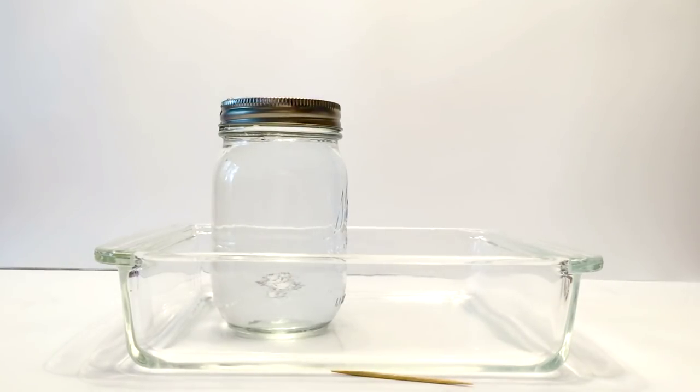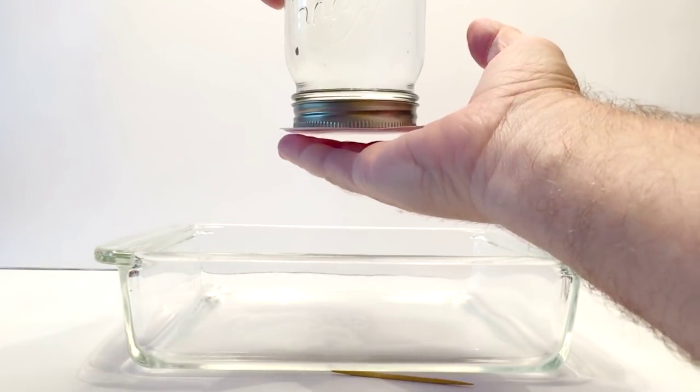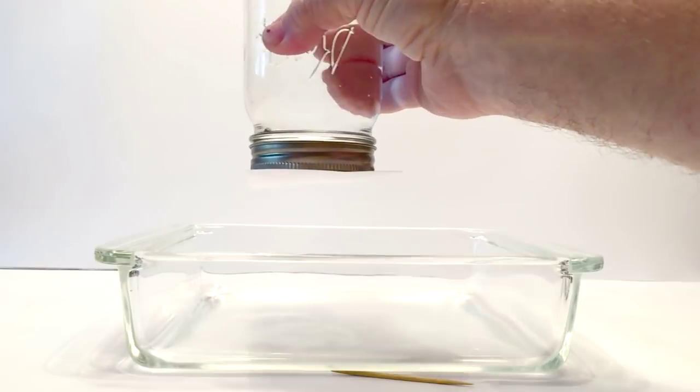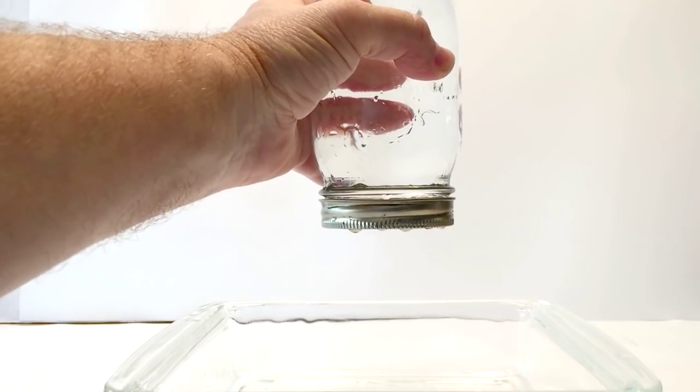Once you get filled to the top, you're going to take your index card, put it on top, and flip the jar upside down. Now you're going to pull the index card out to the side very quickly, not straight down to the side like this, and there you go, surface tension.